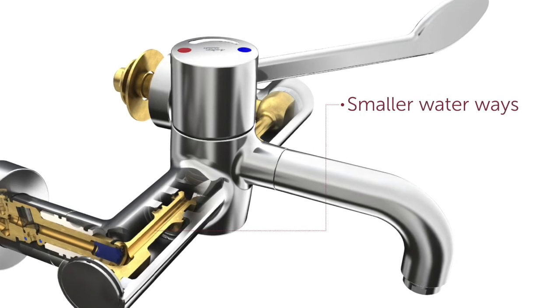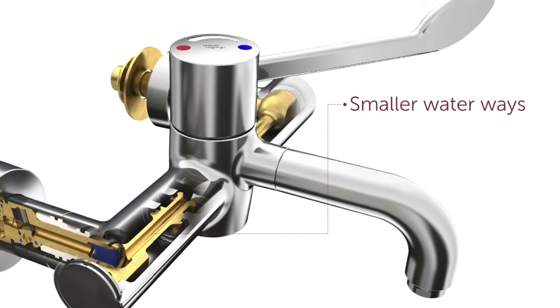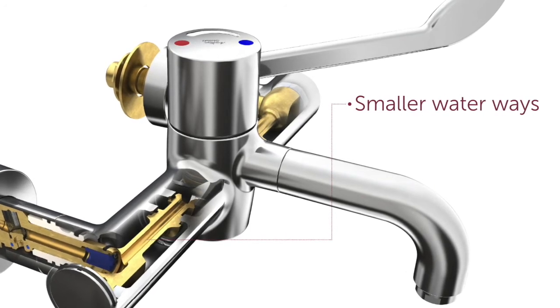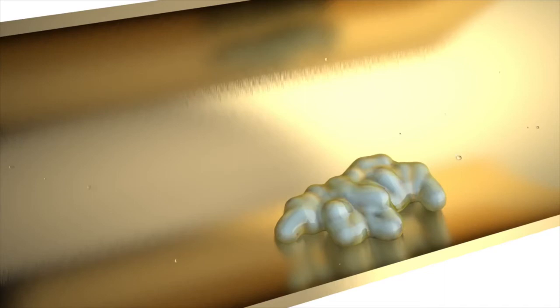Smaller waterways reduce the amount of water left in the tap and create greater velocity, which reduce bacterial attachment. We've also introduced smoother bore waterways, making it harder for bacteria to stick.